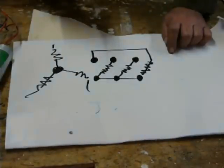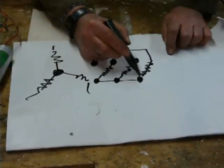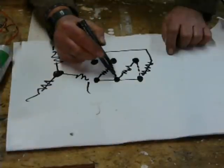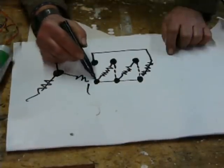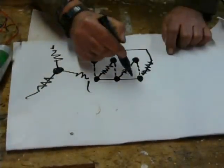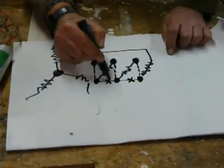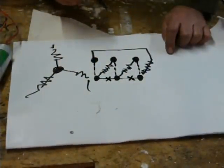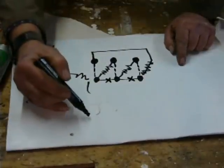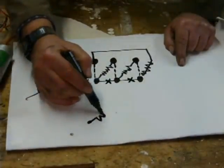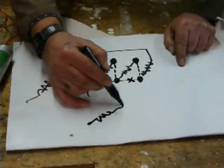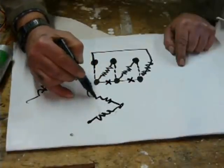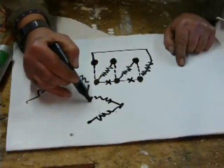If however you connect there, there and there and disconnect those, what you get is what's called delta. And delta is like a triangle.